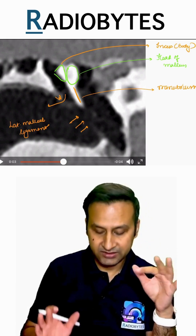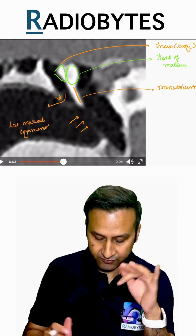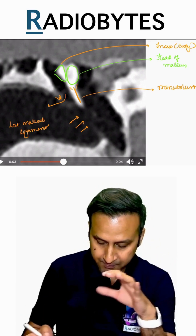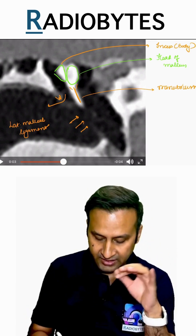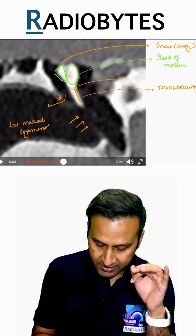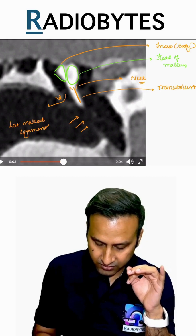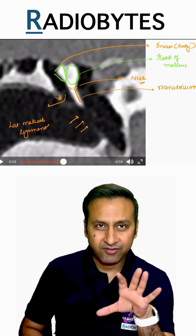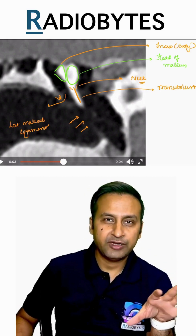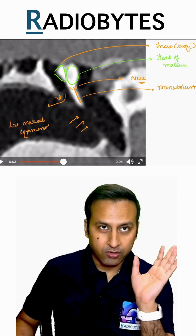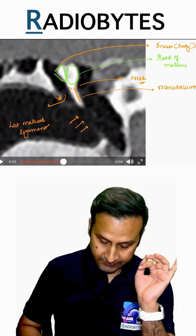This is all about malleus. We have looked at the head of the malleus; this area which connects the manubrium with the head is the neck of the malleus. The lateral process is not very well appreciated on this coronal CT.